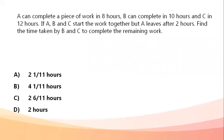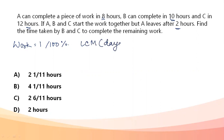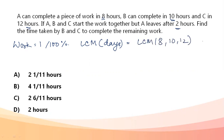Next question: A can complete a piece of work in 8 hours, B in 10 hours, and C in 12 hours. A, B, and C start together but A leaves after 2 hours. Find the time taken by B and C to complete the remaining work. Total work = LCM of 8, 10, and 12 = 120 units.